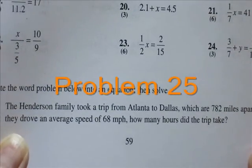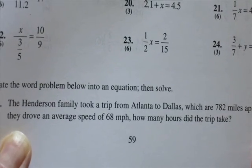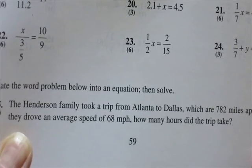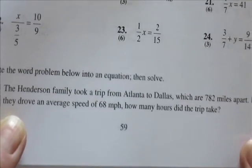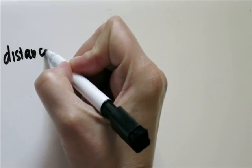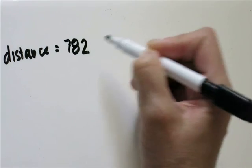Next we have a story problem. The Henderson family took a trip from Atlanta to Dallas, which are 782 miles apart. If they drove an average speed of 68 miles per hour, how many hours did the trip take? The distance in miles is 782.